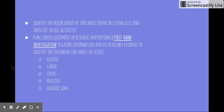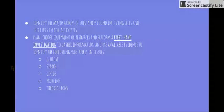Welcome to the next video in the Patterns in Nature topic. This video will be looking at the following two dot points: Identify the major groups of substances found in living cells and their uses in cell activities, and plan, choose equipment or resources and perform a first-hand investigation to gather information and use available evidence to identify the following substances in tissues.